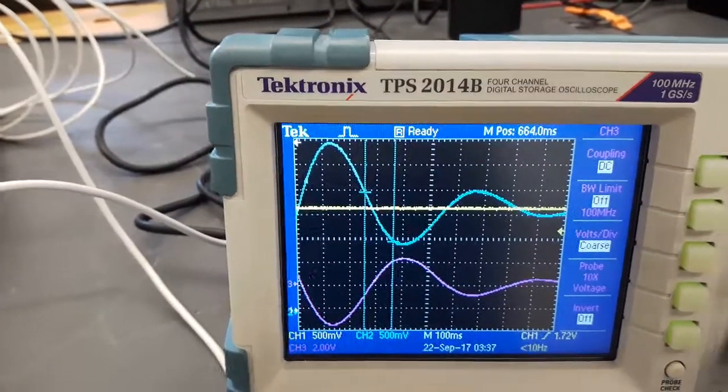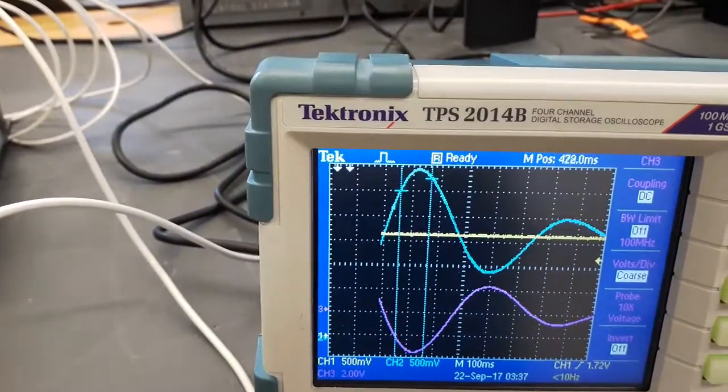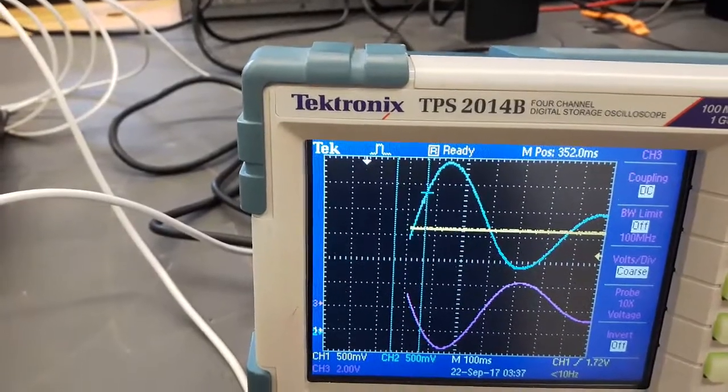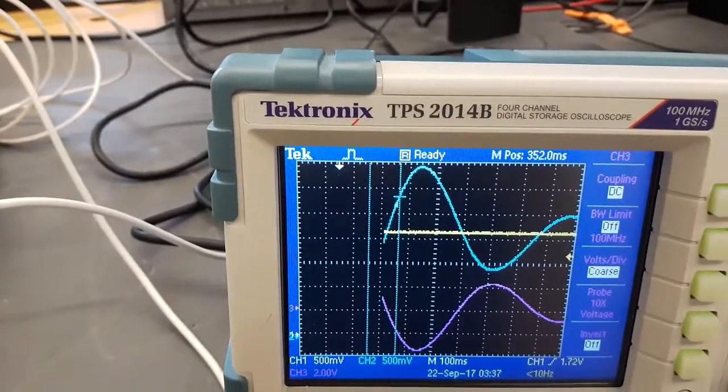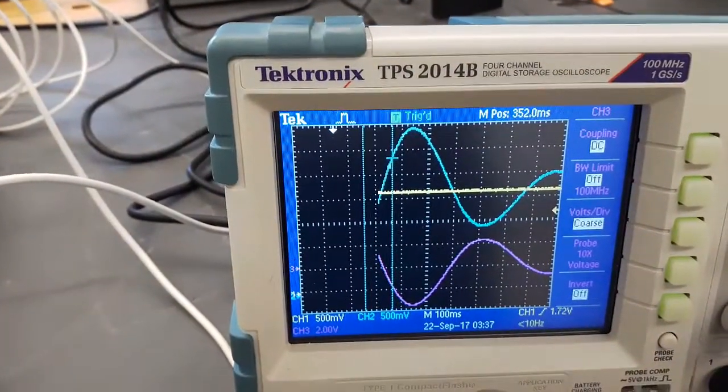You see how it's changed the input to the plant. So again, the purple line is the input to the motor board from the controller board. All right, so that shows you some manual tuning.